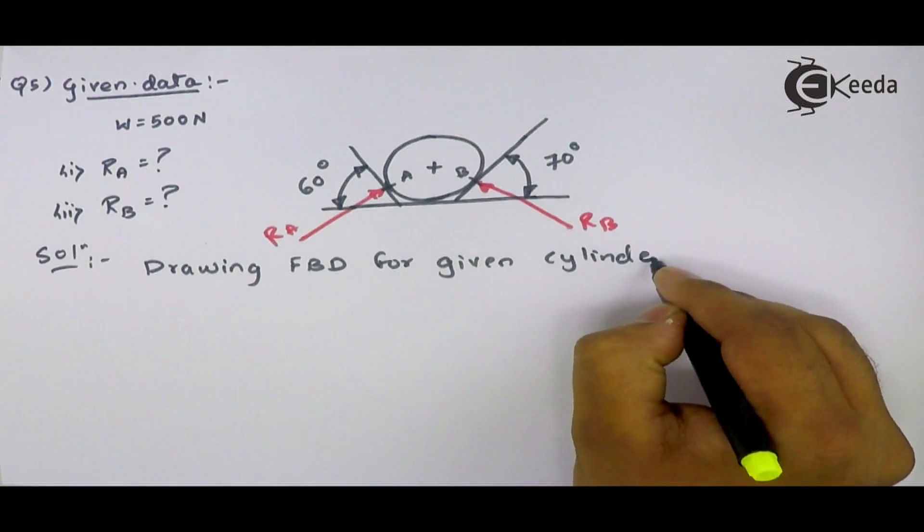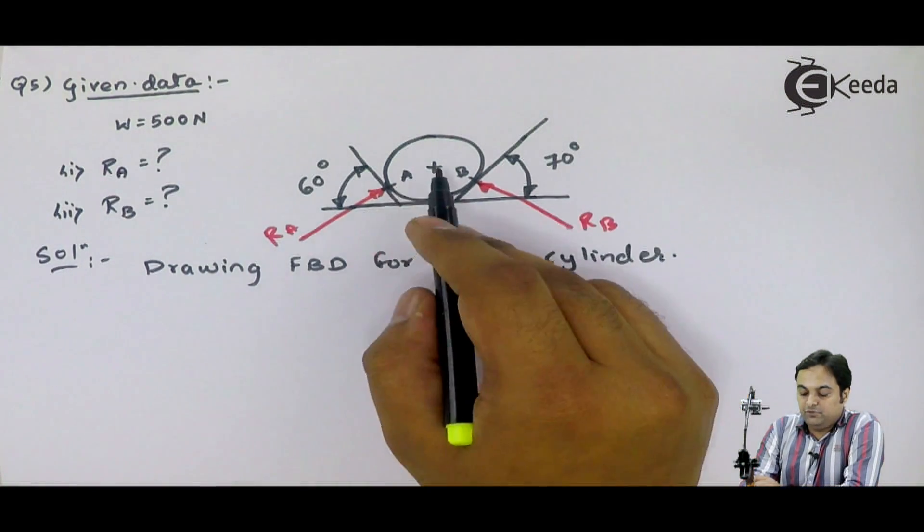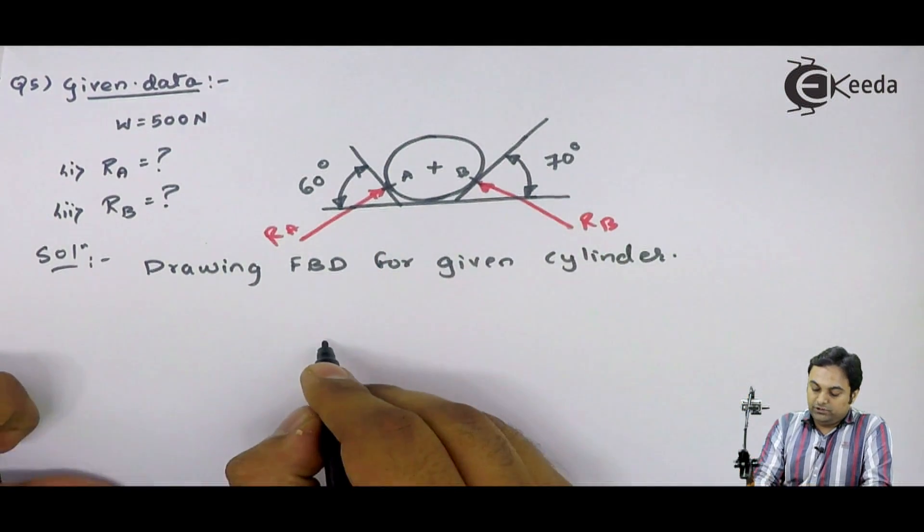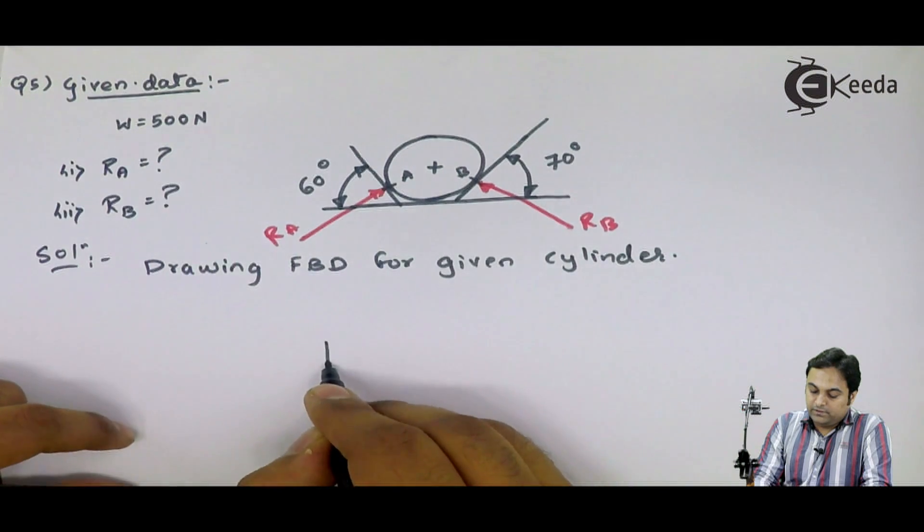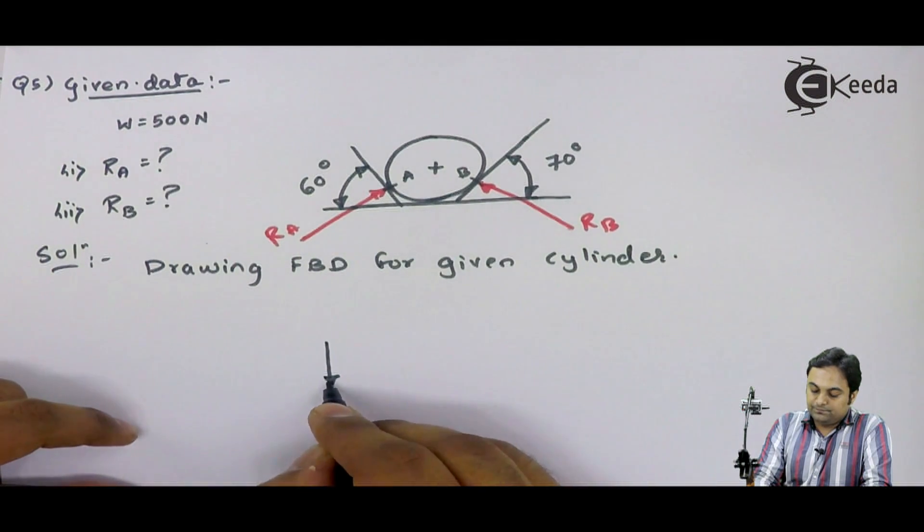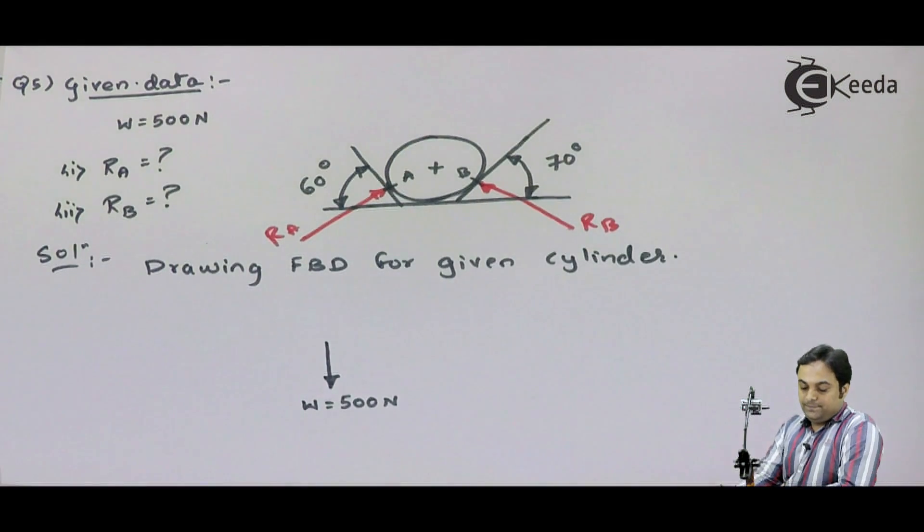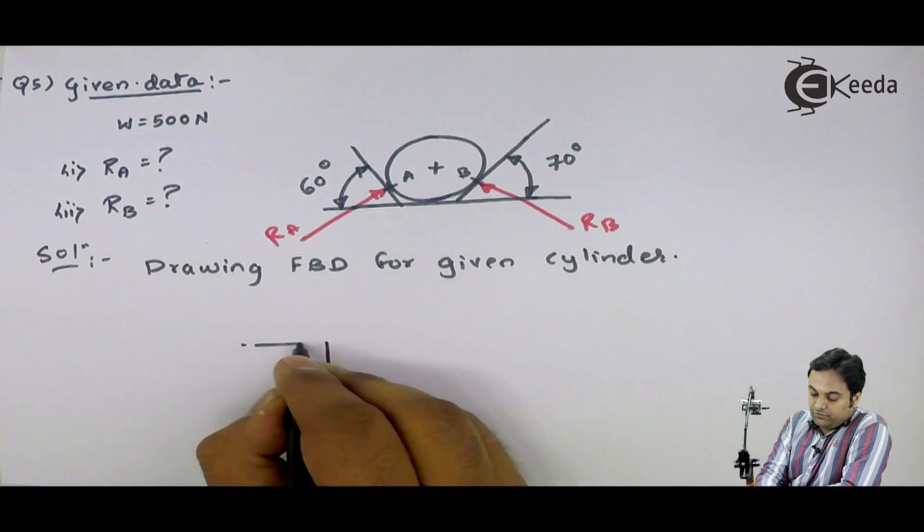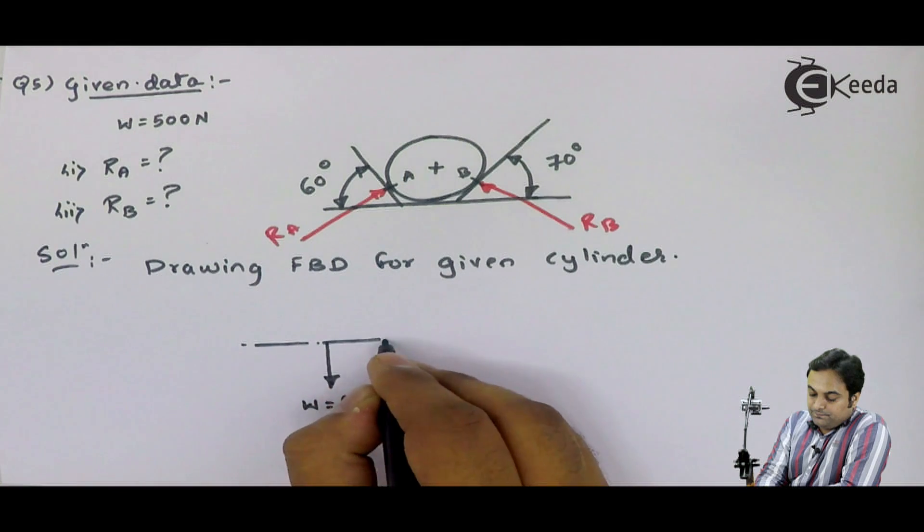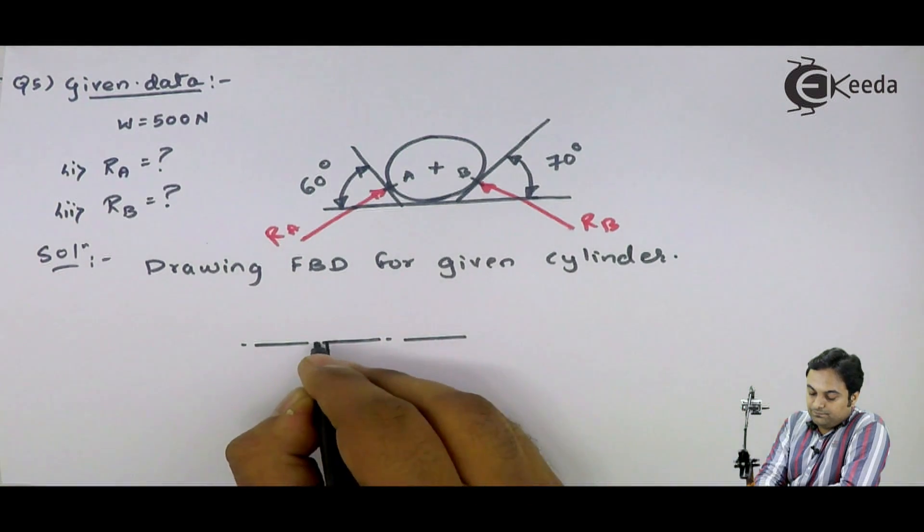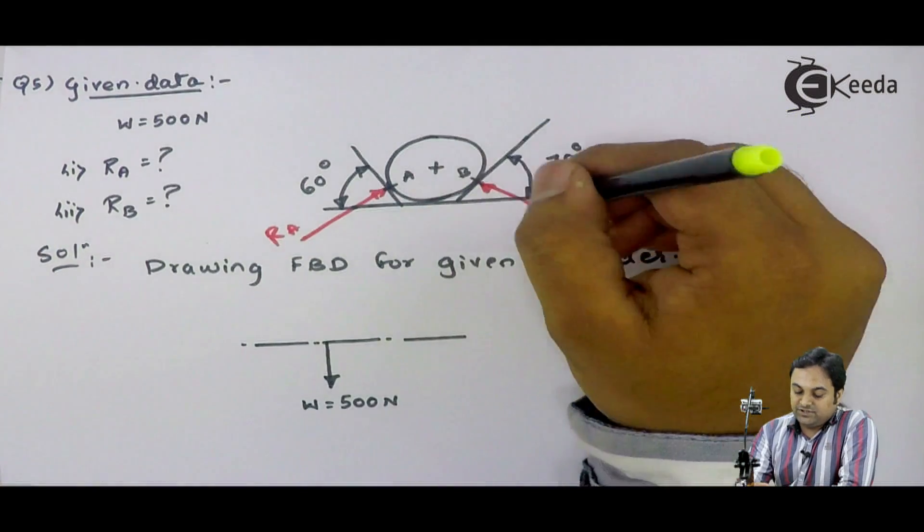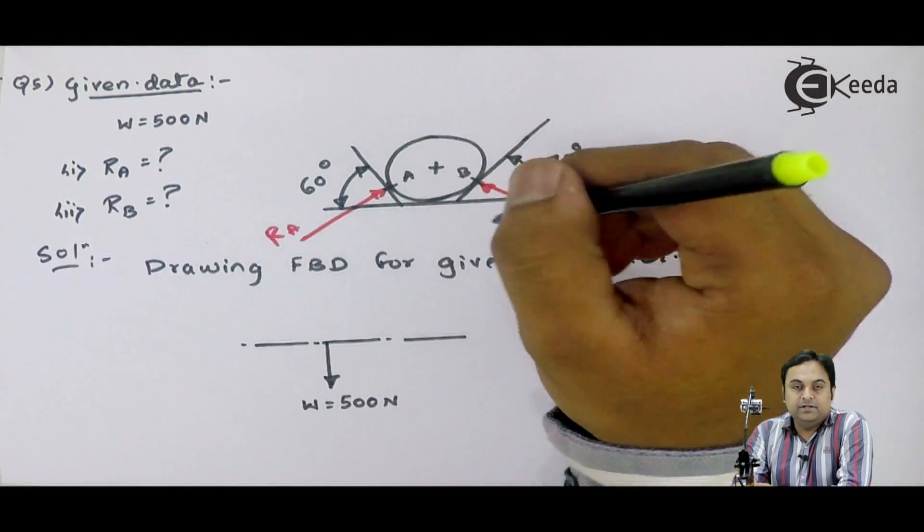The first point is, you have to remove the cylinder with vertical load acting downwards. W is 500 Newton. Next, I will draw a horizontal line. Reaction at FBD is a horizontal line at A and at B, that we would be extending.